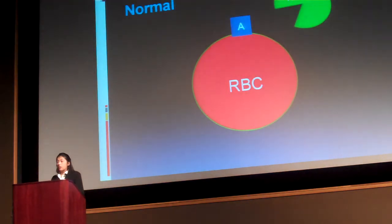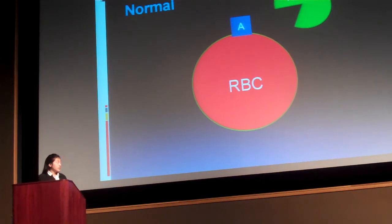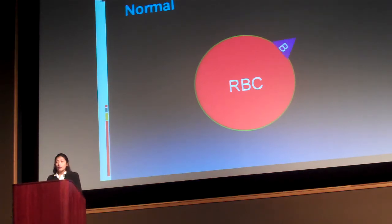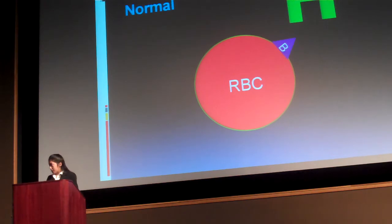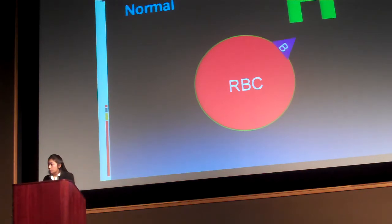Now I'll give a little background on blood type. If someone is type A, they have an A antigen on the surface of their red blood cells and anti-B antibodies in their bloodstream. If they're type B, they have B antigens and anti-A antibodies. If they're type AB, they have both A and B antigens on the surface of their erythrocytes and neither anti-A nor anti-B antibodies. If they're type O, they have neither A nor B antigens, and they have both anti-A and anti-B antibodies in their bloodstream.